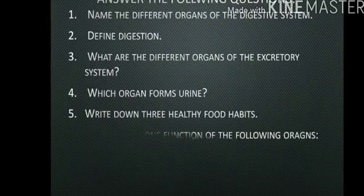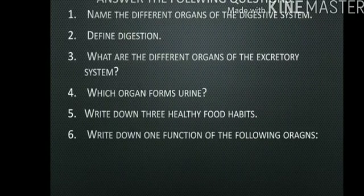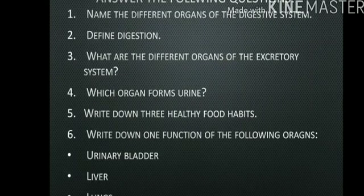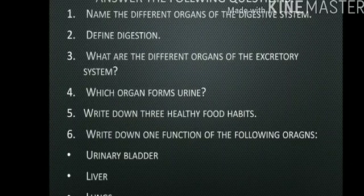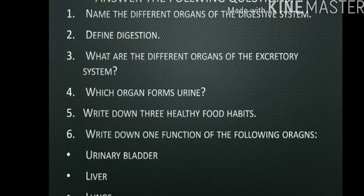Next we have write down one function of the following organs. So there are four organs here: urinary bladder, liver, lungs, and large intestine. If you go through the functions of these particular organs throughout the video, you will get at least two functions of each of the organs, so you have to write down only one.